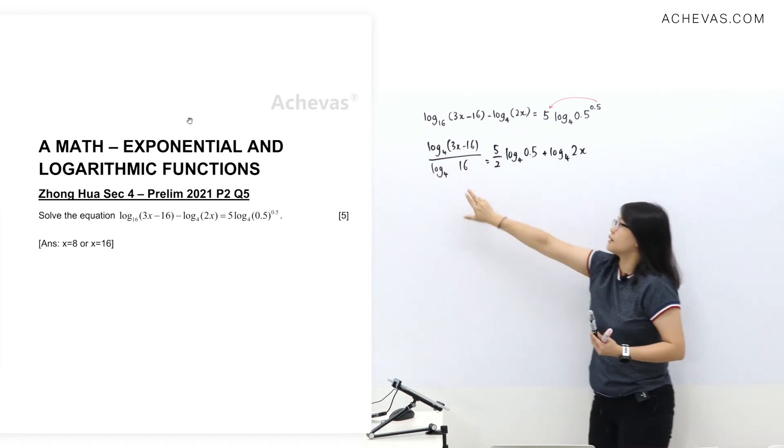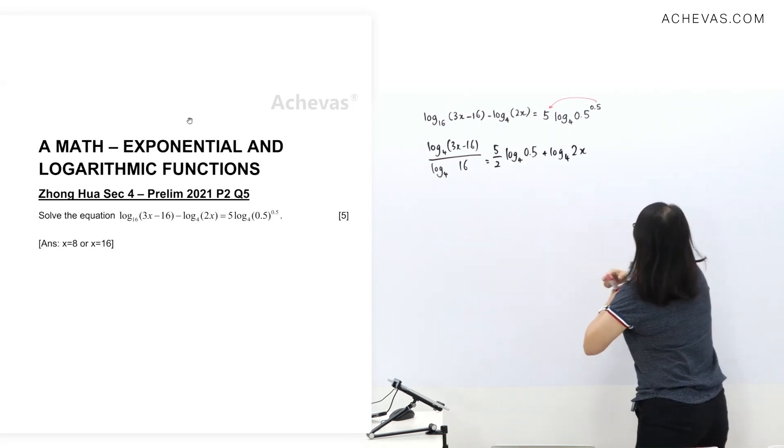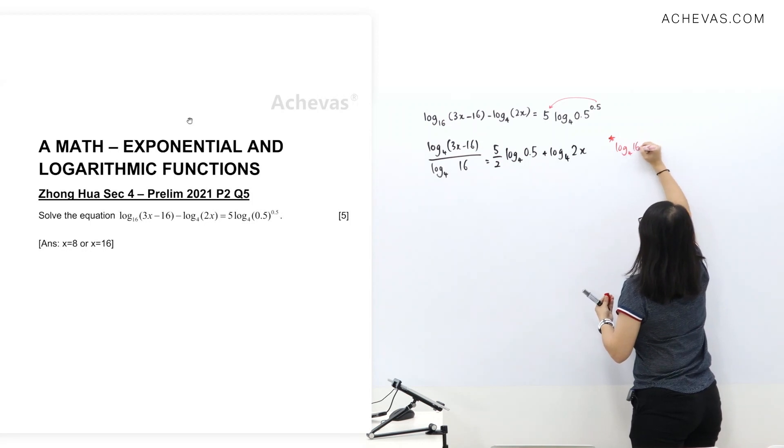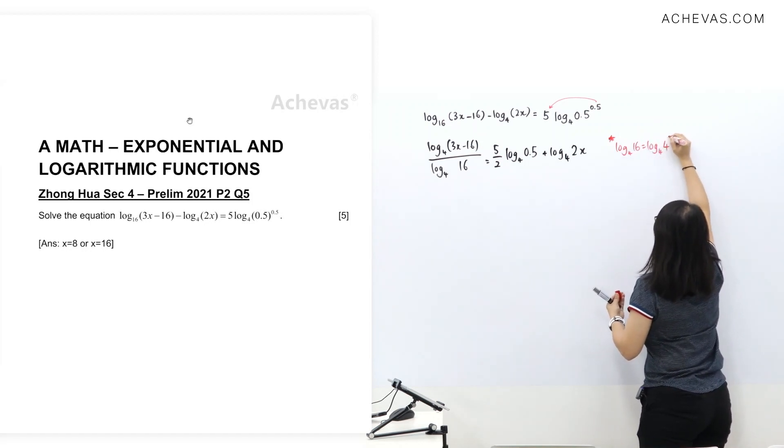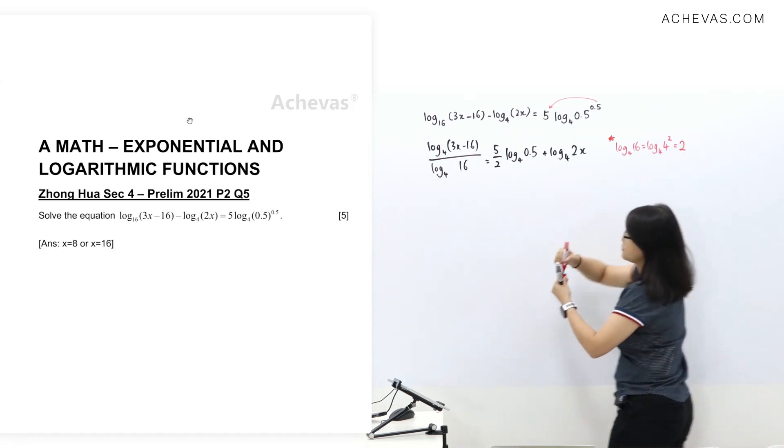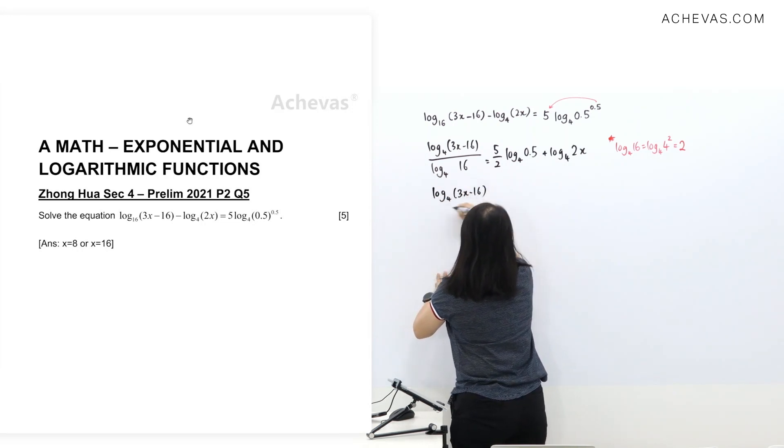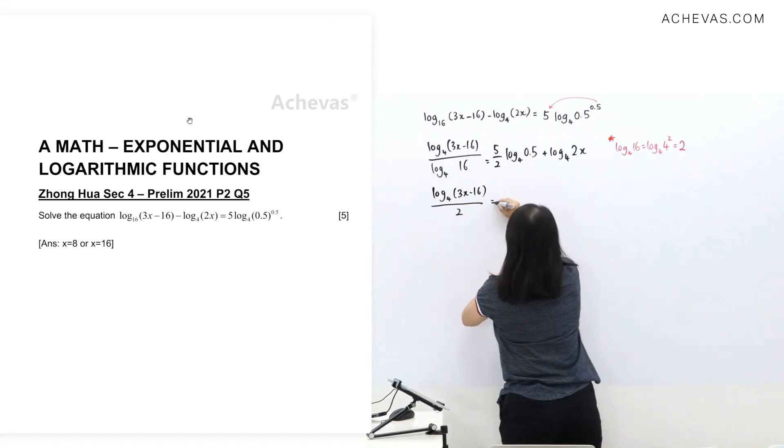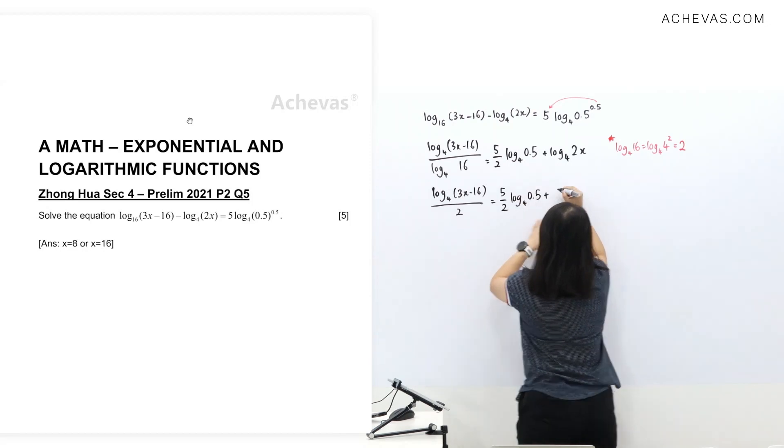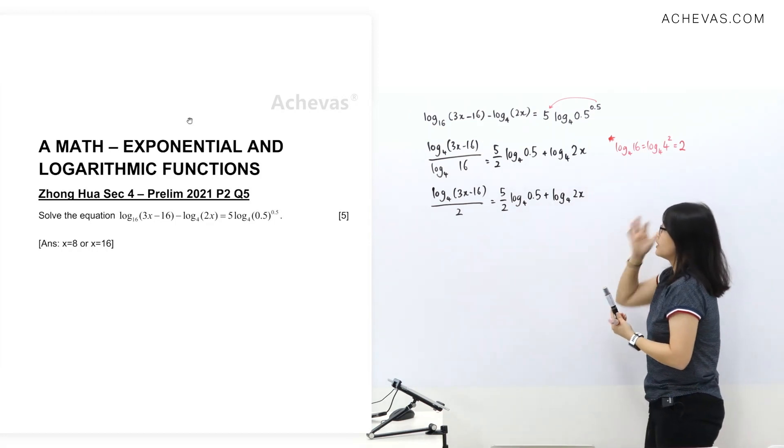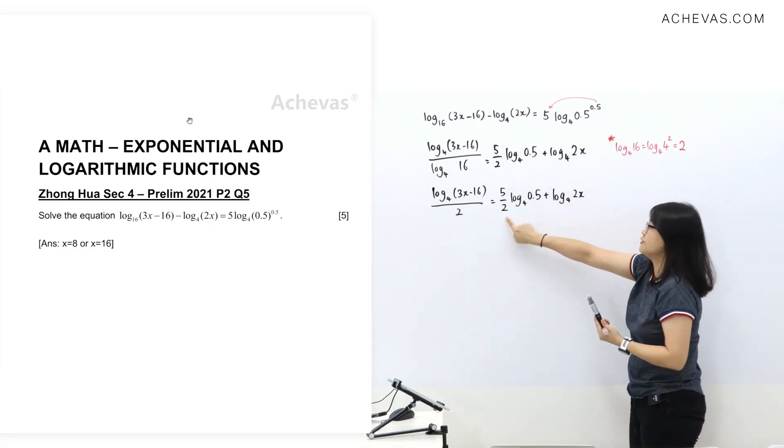So I'll get something like this. And I'm going to change this log base 4 of 16. For those who are wondering how do we change this one: log base 4 of 16 is log base 4 of 4 to the power 2. This one gets cancelled, you get 2 here.